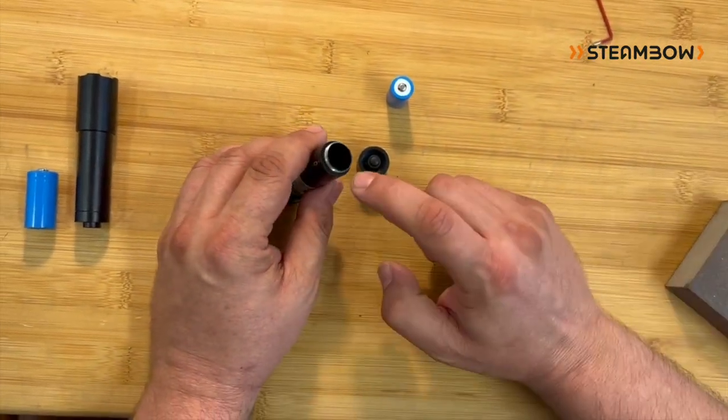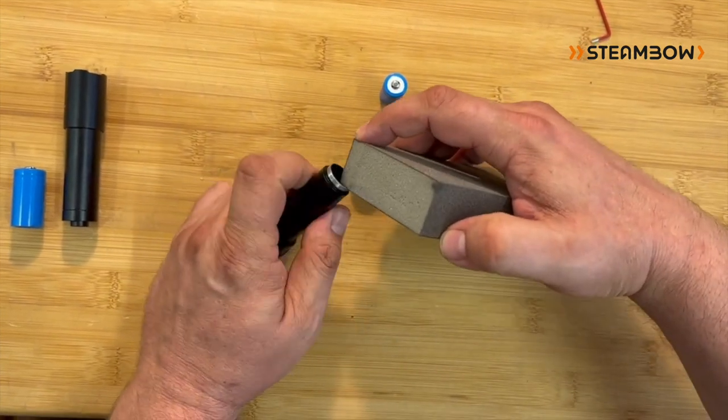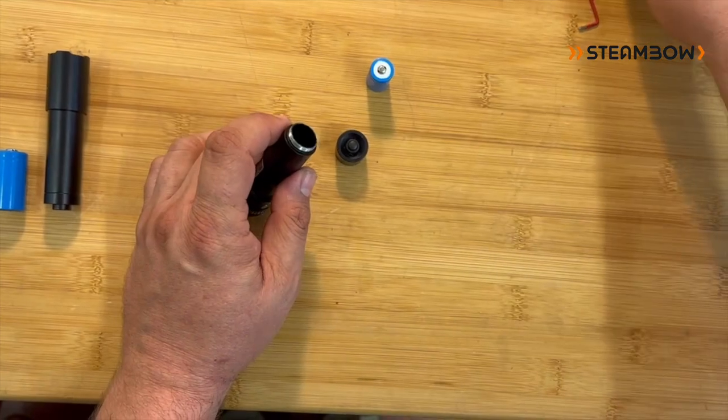Usually the reason is that there's a small recess from cutting the threads. If you take a sanding block and just sand around, get this recess off and then the battery fits better.